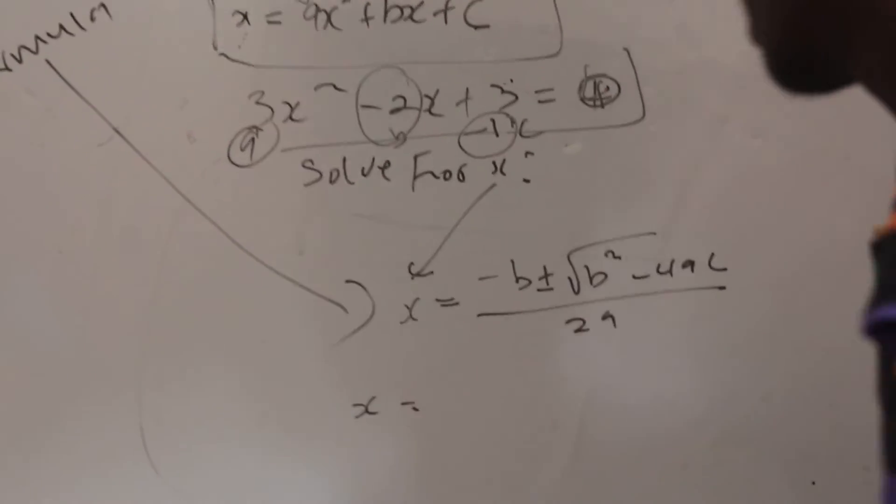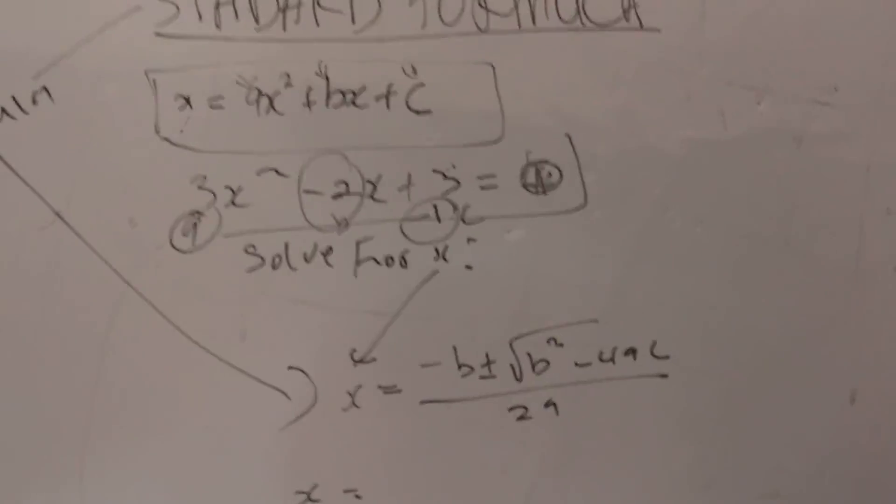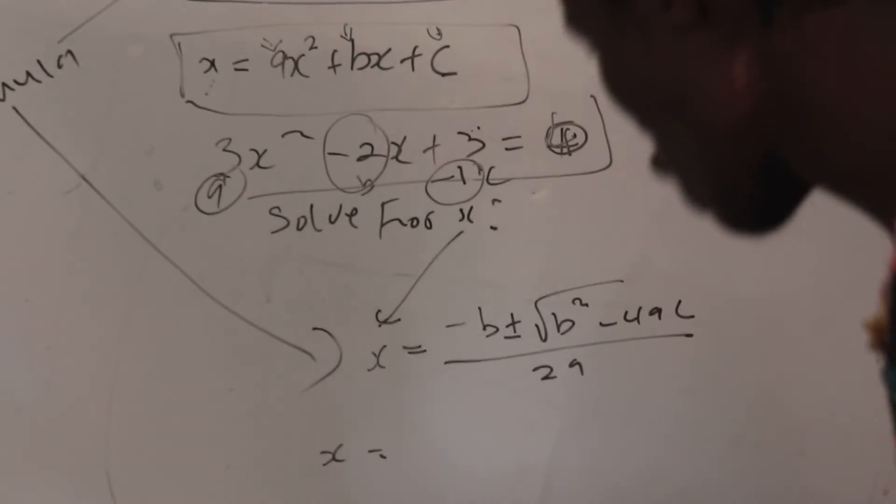So basically my -1 is actually my c now. What do I have to do now? I just have to substitute, and every time we substitute, what do we do? We open up brackets.